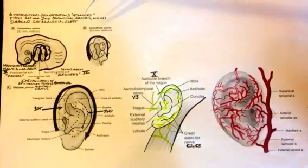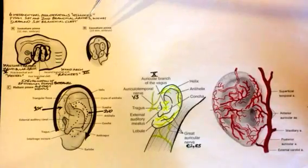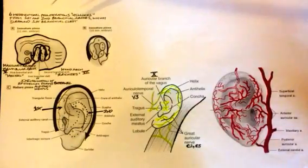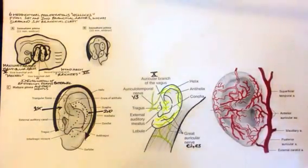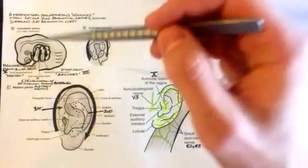These hillocks are derived from the first and second branchial arches, which is what they're referred to in humans. They were originally discovered as pharyngeal arches in fish. Here's a representation of a human embryo developing.